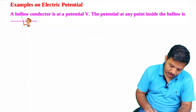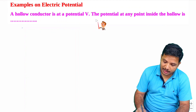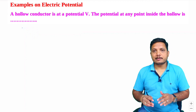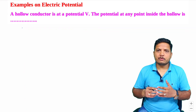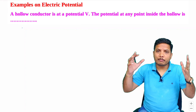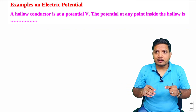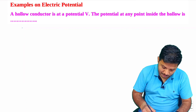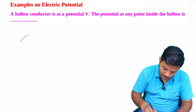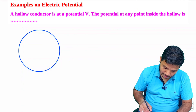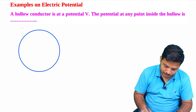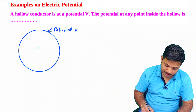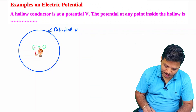A hollow conductor is at potential V. The potential at any point inside the hollow is how much? This is a question based on fundamentals. One should know that when you have a hollow metallic conductor, inside the hollow metallic conductor, the electric field will always be zero.